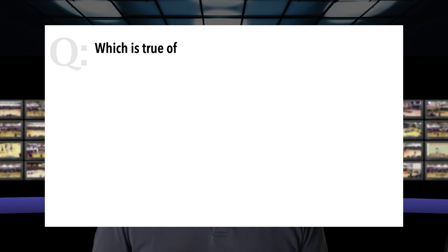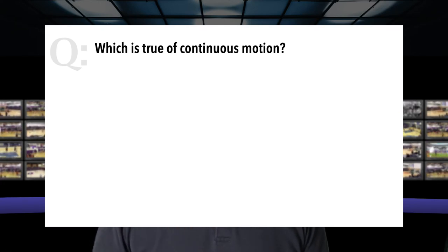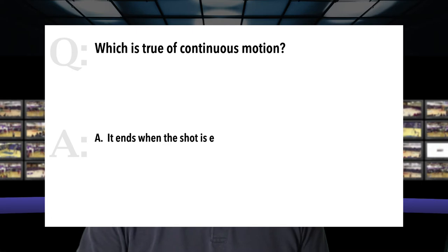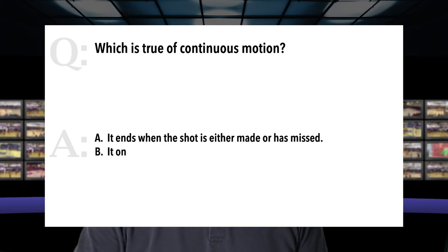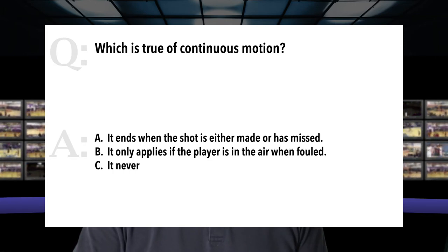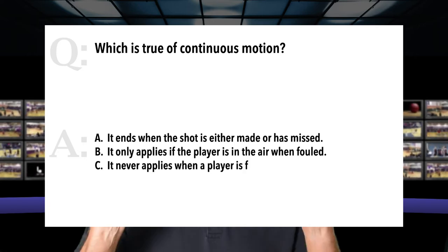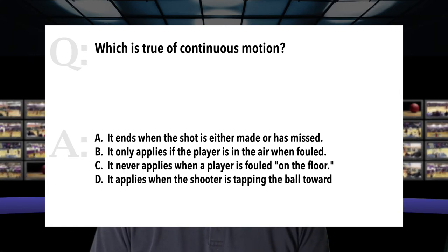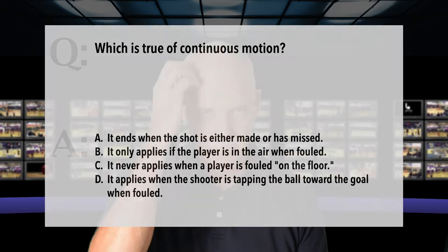Question: Which is true of continuous motion? Possible answers are A: it ends when a shot is either made or has missed. B: it only applies if the player is in the air when fouled. C: it never applies when a player is fouled on the floor. D: it applies when the shooter is tapping the ball toward the goal when fouled. Which is true of continuous motion? My experience is there's a lot of confusion about continuous motion. Officials have a hard time talking about it or defining it.